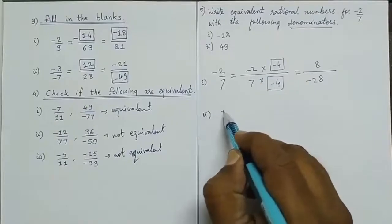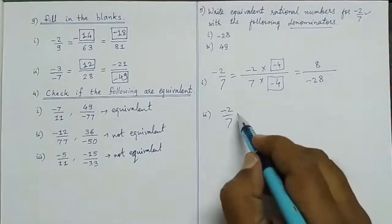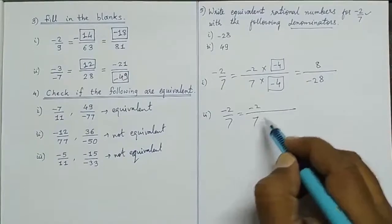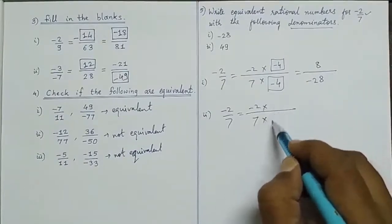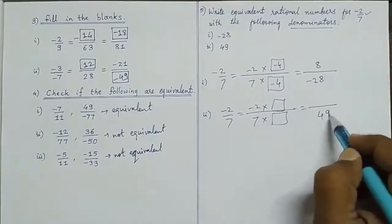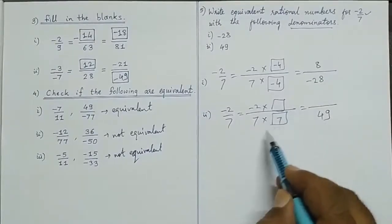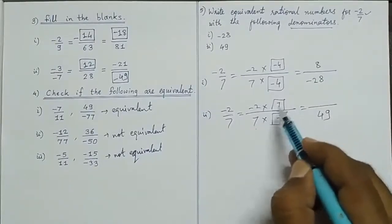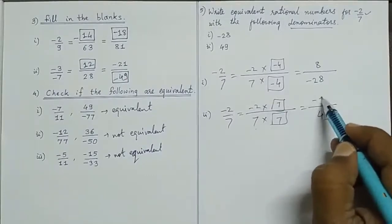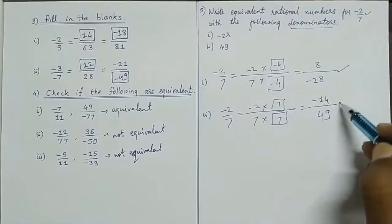Second sum: we have minus 2 upon 7 and need denominator 49. Since 7 sevens are 49, we multiply 7 to numerator: minus 2 into 7 gives minus 14. So the answer is minus 14 upon 49.